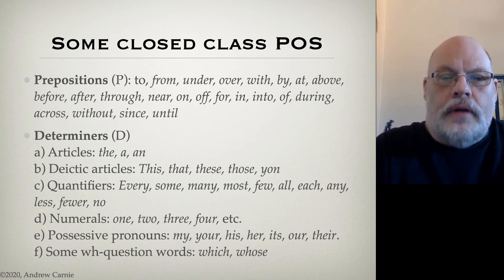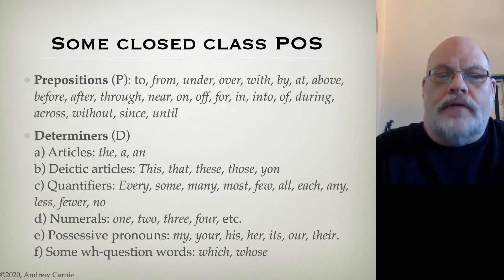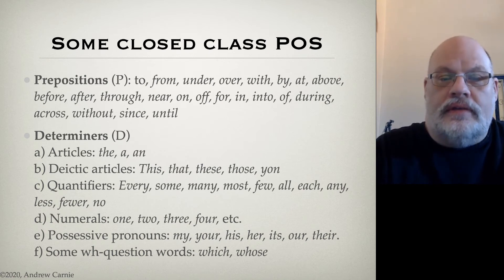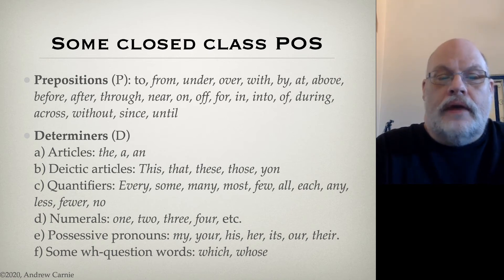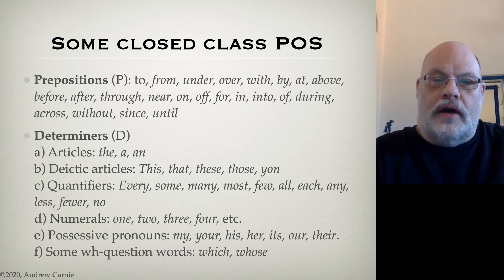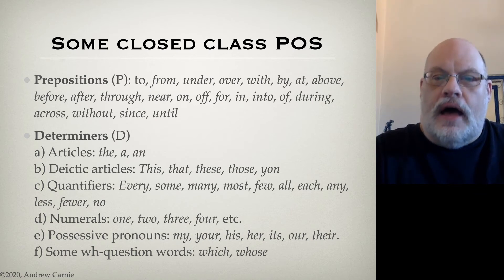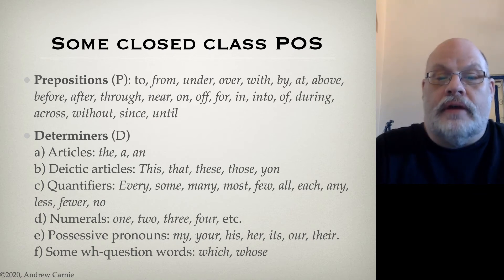Another major class of functional items are the determiners, which we indicate with the letter D. So when you see D in a syntactic diagram, it stands for determiner. D contains a whole bunch of different things. It contains articles — words like the, a, and an. Deictic articles — words like this, that, these, those, yonder.